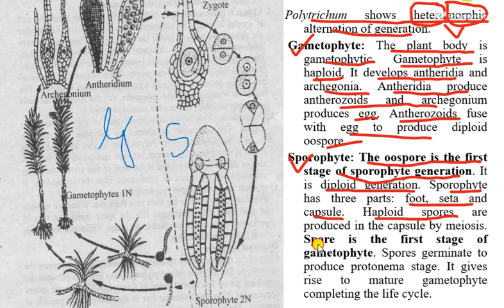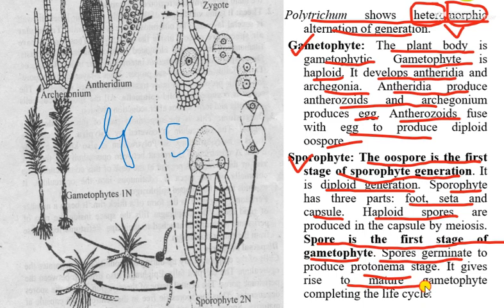The spore is the first stage of the gametophytic generation. These spores will germinate to produce protonema, and the protonema will develop into a mature gametophyte, thus completing the life cycle of Polytrichum.